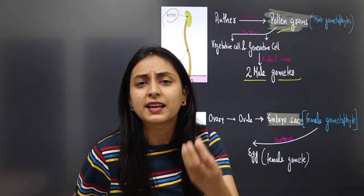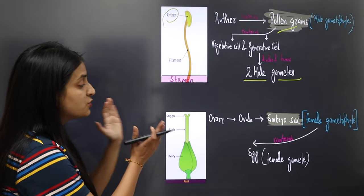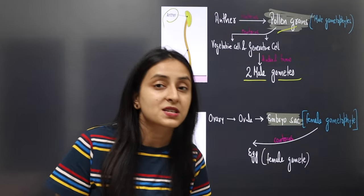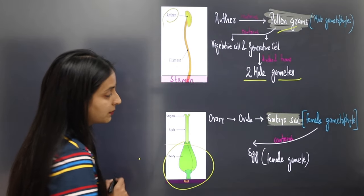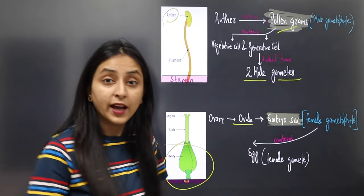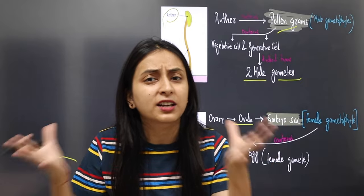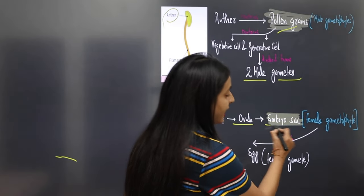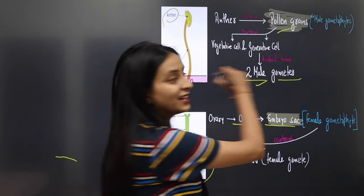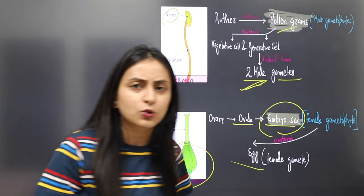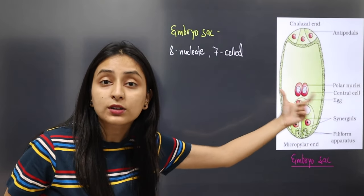We need female gametes for fusion, so we come to the female gametophyte. The female reproductive organ of a plant is the pistil or carpel, with three parts: stigma, style, and ovary. Inside the ovary, there is an ovule, and inside the ovule are the female gametes. The structure that contains the female gametes is the embryo sac, and inside the embryo sac is the egg cell, which will fuse with the male gametes. In double fertilization, the embryo sac plays a very important role.